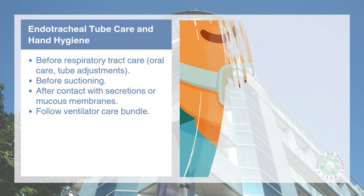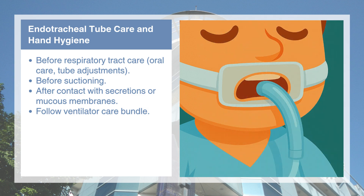For patients with endotracheal tubes, strict hand hygiene before and after airway care is key to preventing ventilator-associated pneumonia. Before suctioning or performing oral care, perform hand hygiene to avoid introducing bacteria into the respiratory tract. After handling secretions or adjusting the tube, clean your hands again to avoid spreading pathogens. A consistent ventilator care bundle and strict hand hygiene work together to improve patient outcomes.